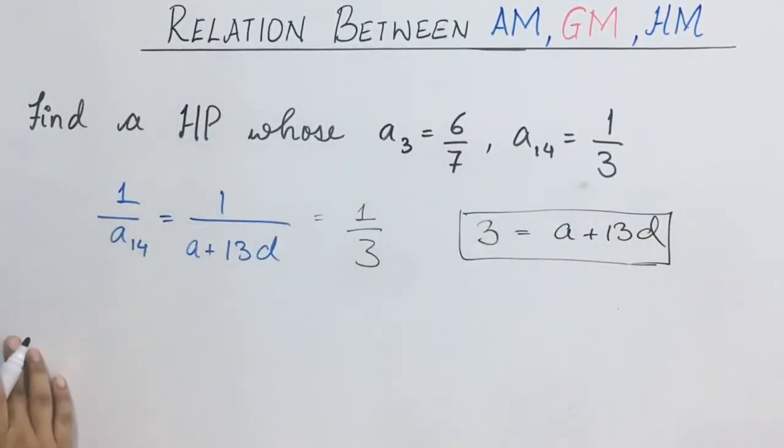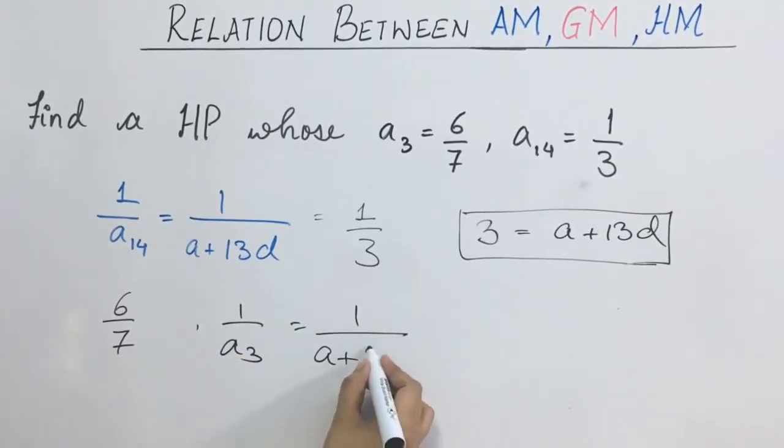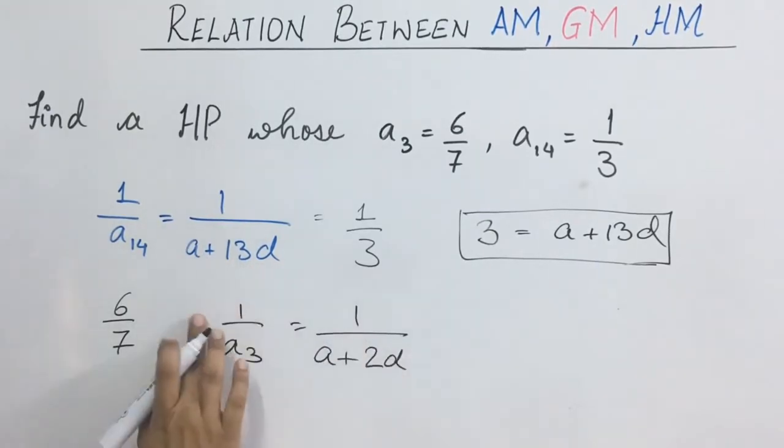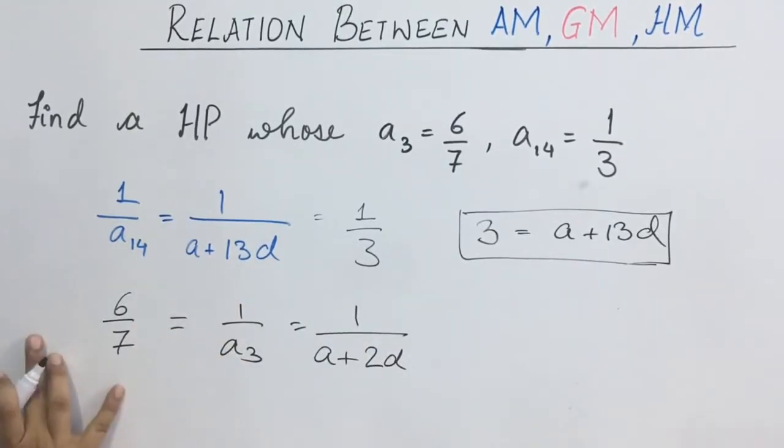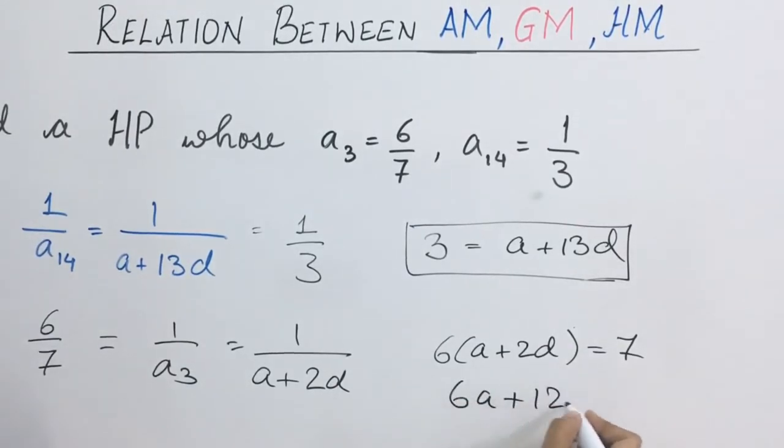Now we have another case. A3 is equal to 6 upon 7. So A3 will be equal to 1 upon A plus 3 minus 1, that is 2D, and this is equal to 6 upon 7. So we have here second equation. 6 times of A plus 2D is equal to 7. This will be 6A plus 12D equals to 7.